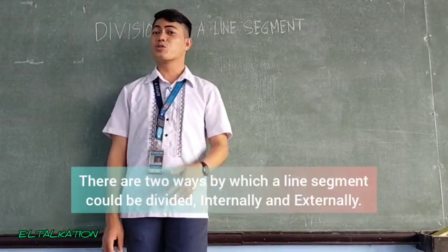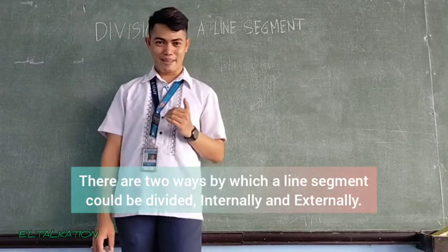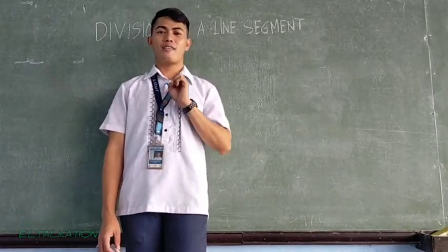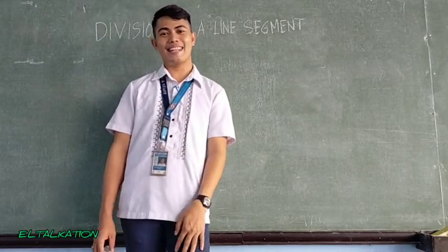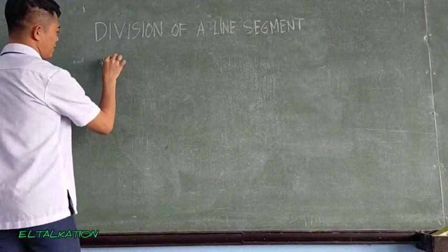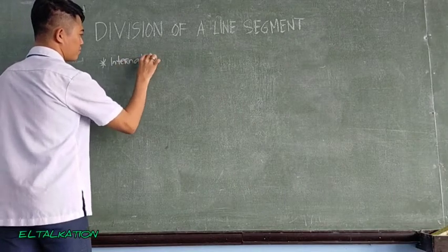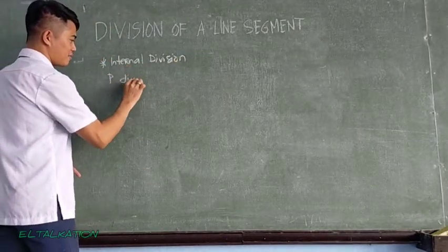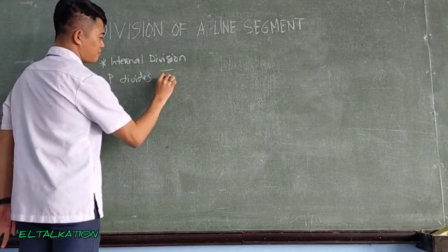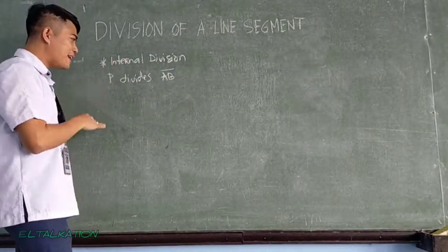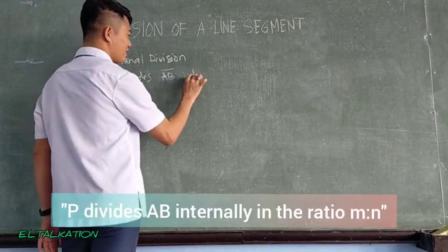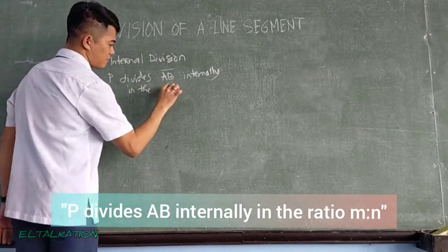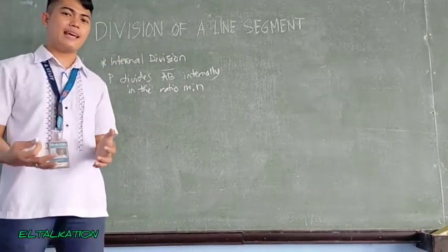Division of a line segment. So there are two ways by which we could divide a line segment - it can be internally or externally. But at this point, let me discuss how to divide a line segment internally. Internal division. So according to the book, P divides segment AB. So again, P divides segment AB internally in the ratio M to N. So para mas maintindihan po natin, let's have an illustration.